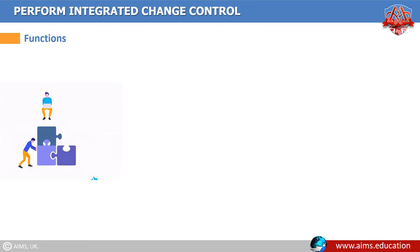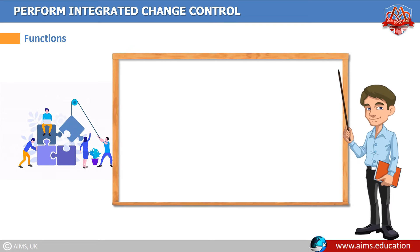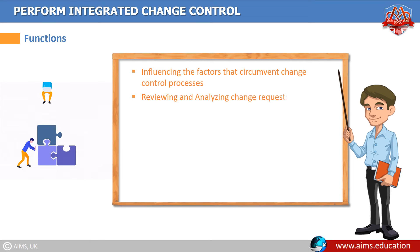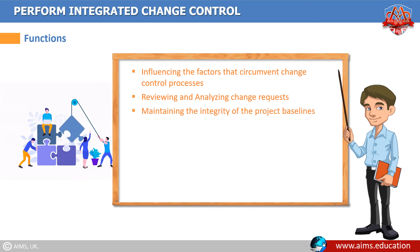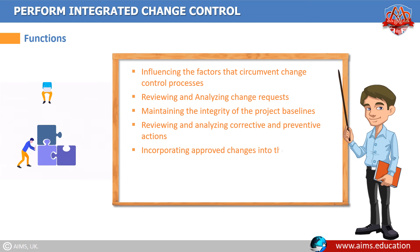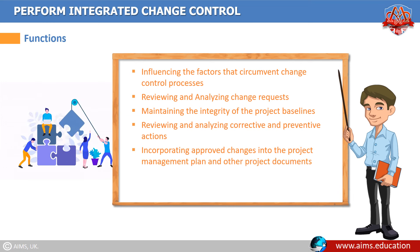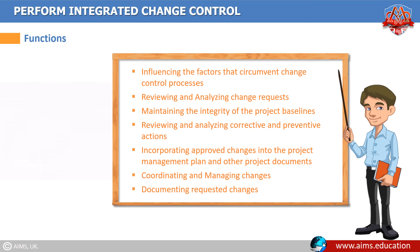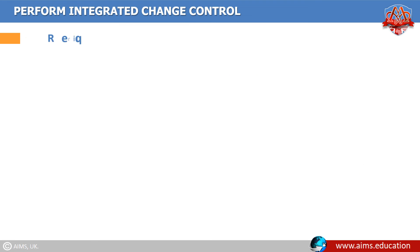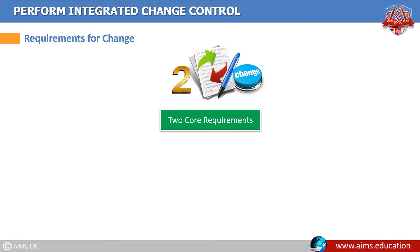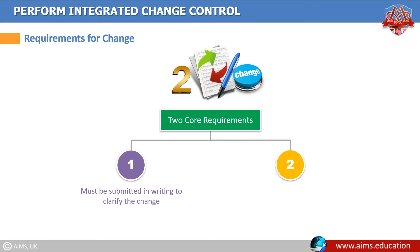Functions of the perform integrated change control process: influence factors that circumvent change control processes; review and analyze change requests; maintain the integrity of the project baselines; promptly review and analyze corrective and preventive actions; incorporate approved changes into the project management plan and other project documents; coordinate and manage changes across the project; and document requested changes and their impacts. Requirements for change: all change requests must be submitted in writing to clarify the change, and all change requests must come through the formal change control system. No one can directly ask the project team to make changes.